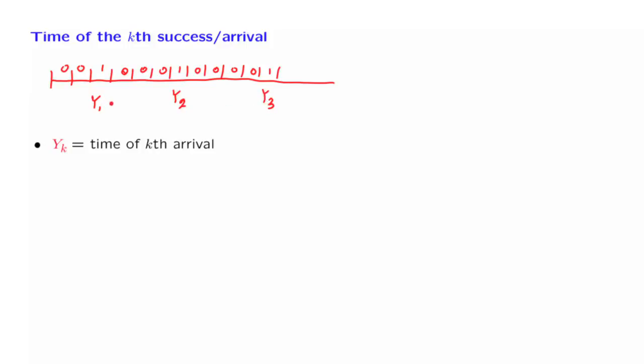Now, the time that the first arrival comes, this is also what we called t1. And t1 is this length. It's the time until the first arrival.